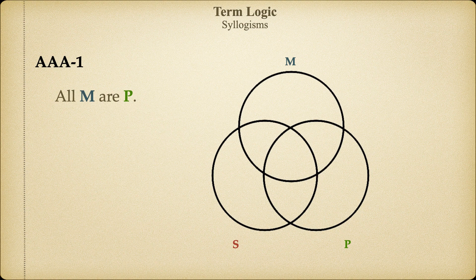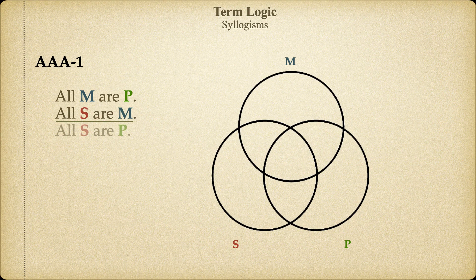We begin with the major premise, which contains the predicate of the conclusion. Since this is a Figure 1 syllogism, the middle term is in the subject position of the major premise. Next, we add the minor premise, and since this is Figure 1, the middle term goes in the predicate position. Finally, we add the conclusion. Now we're ready to add the information from the premises to our diagram, one premise at a time.